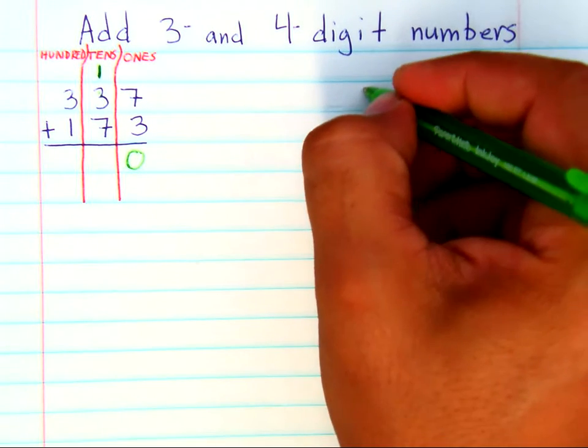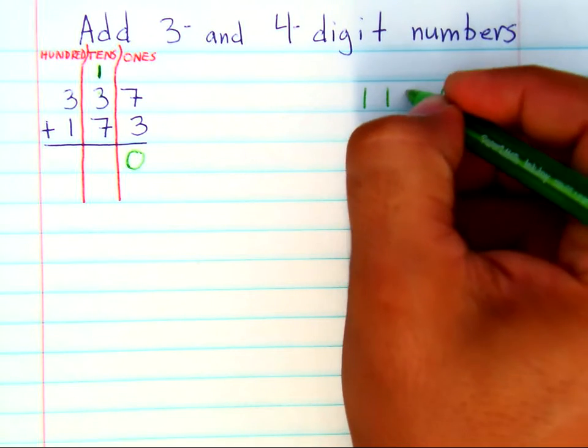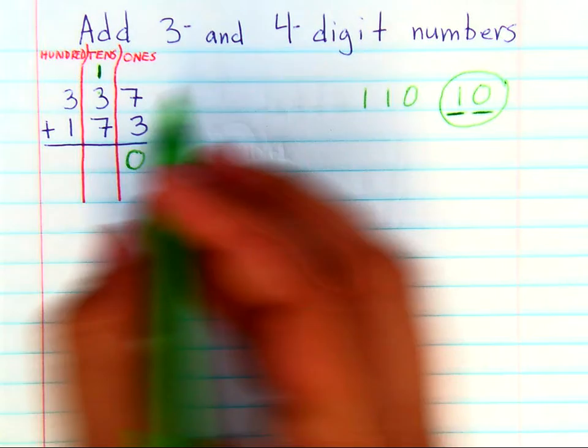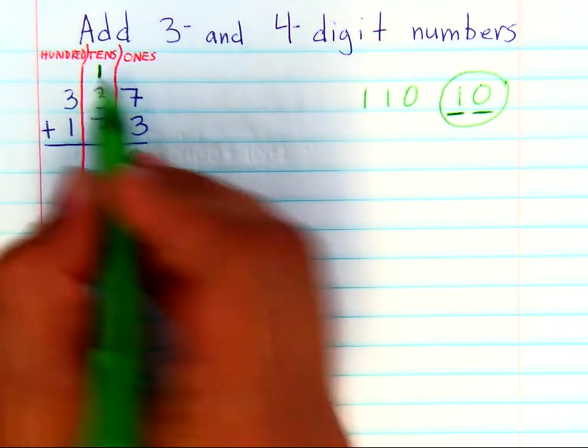And we know that 110, seventy plus thirty is 100, plus ten is 110. So again, the zero is going to go here, doesn't really affect the ones place at all.